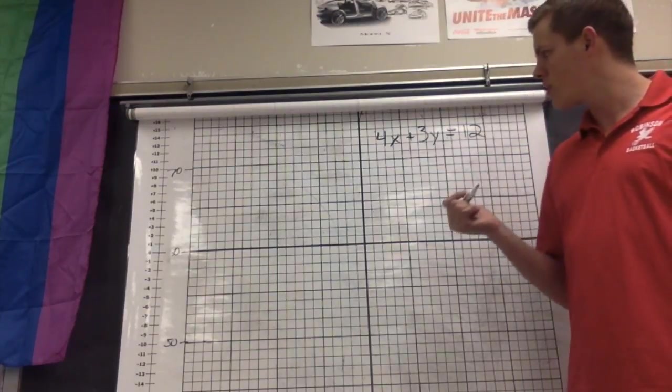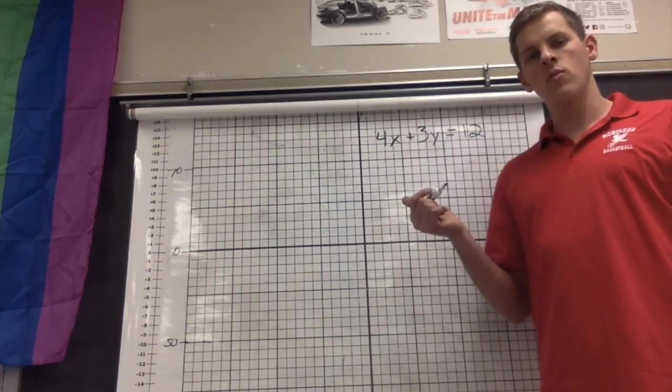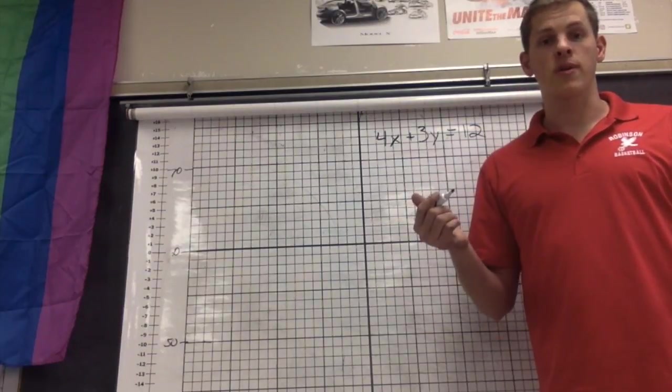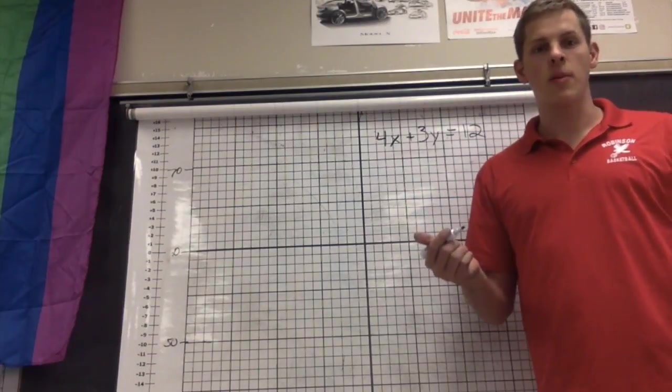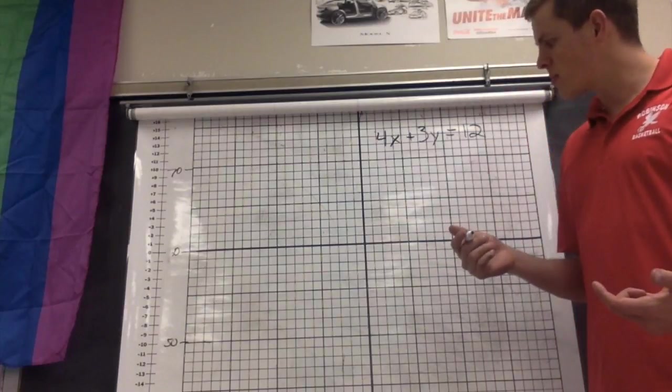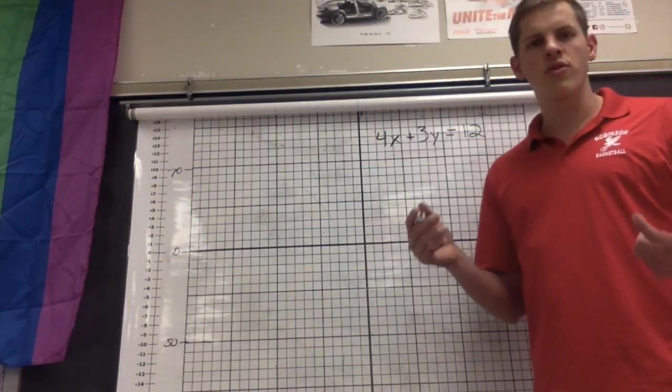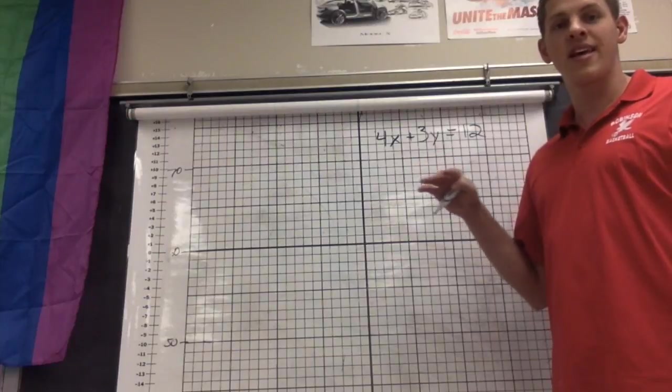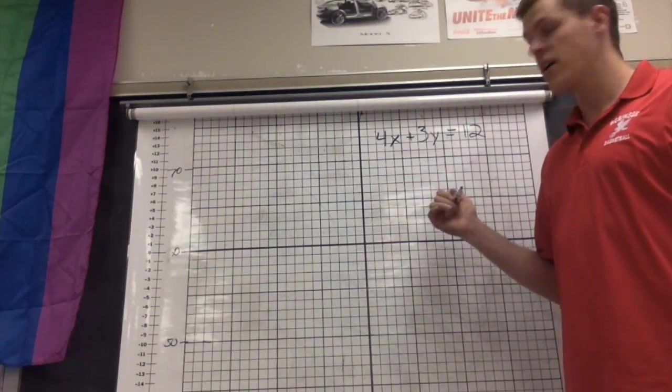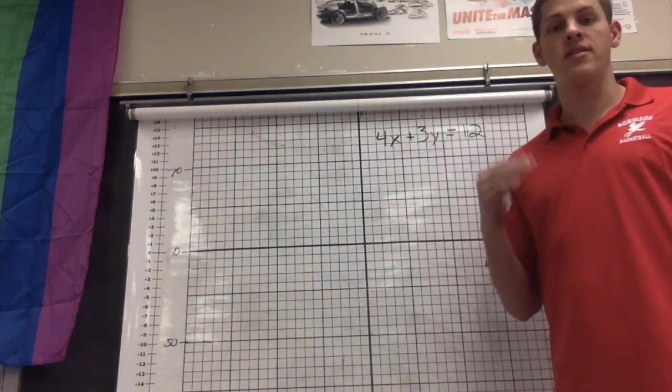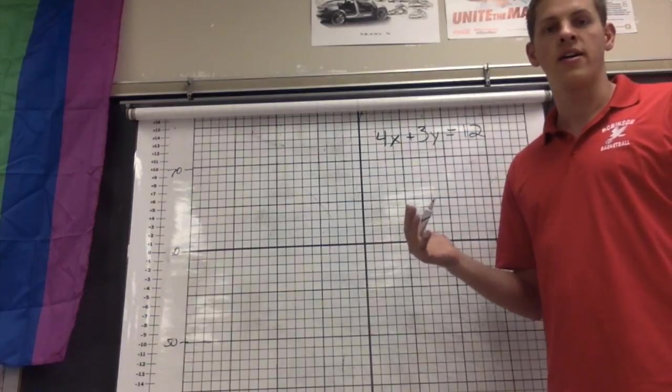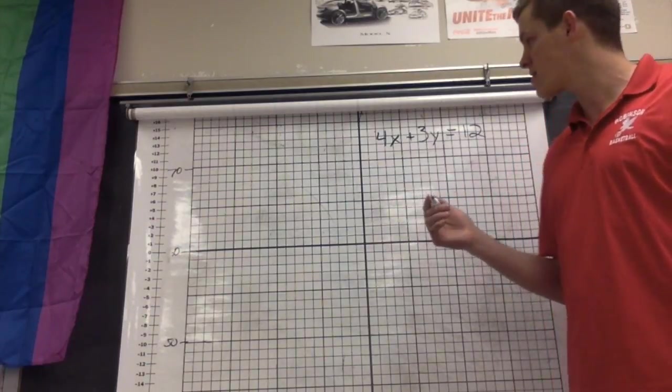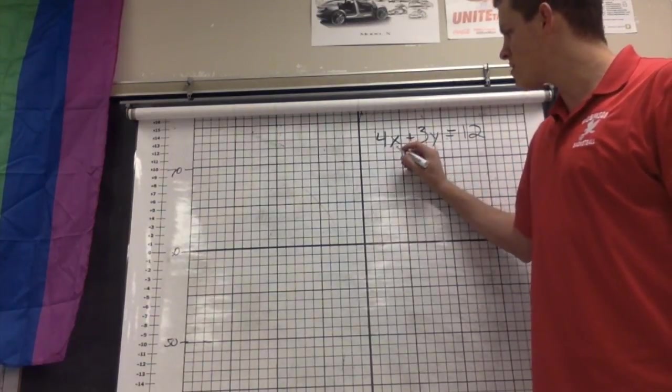So I want to start out with, since we're not the strongest at algebra, what I want to do is guess and check a couple points. So the first thing I'm going to do is I want to plug in some real easy numbers into this equation to give me a set of coordinates. So I'm thinking my two easiest ones are if I put in a 0 for x and then a 0 for y. So first I'm gonna start with a 0 for x.